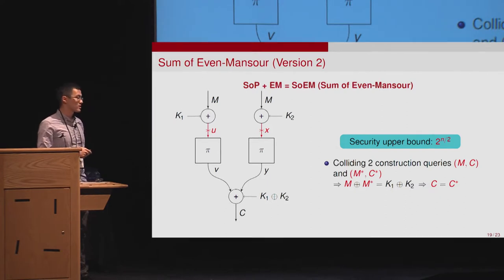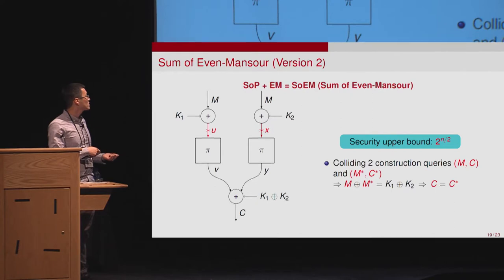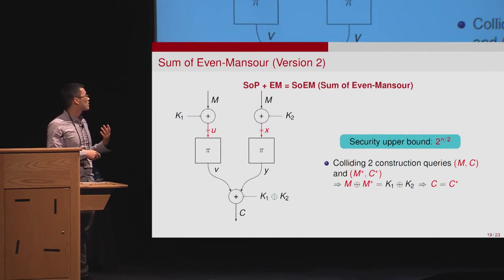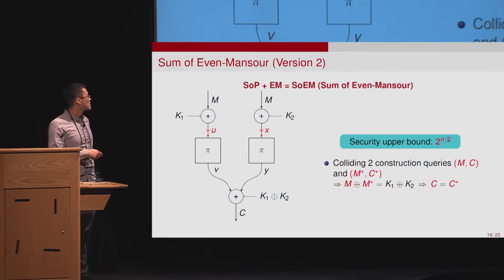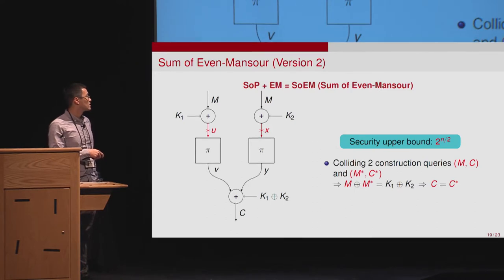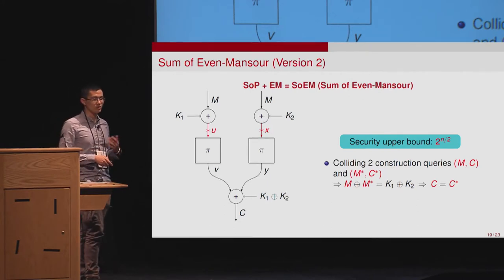The attack idea for the second variant is simple: within birthday-bound queries, we can find two construction queries M and M* where M and M* collide. As long as this equation holds, we can show that the output C equals the output C*, allowing us to distinguish the construction from random.